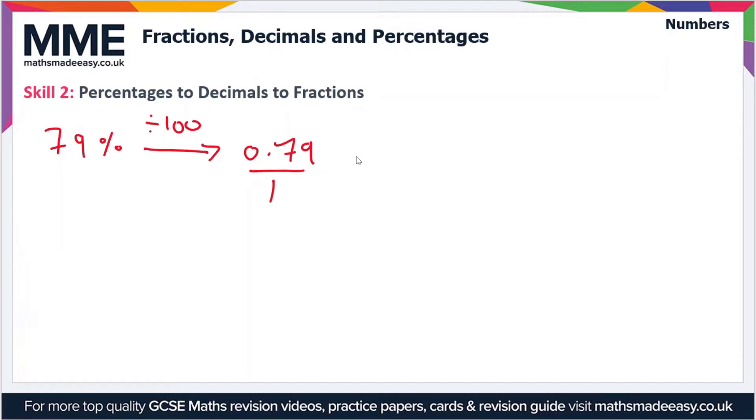Then what we're going to do is multiply top and bottom, so that's the numerator and the denominator, by 10. So that gives us 7.9 over 10, and then we'll do the same thing, multiply top and bottom by 10, and that gives us 79 over 100. So this is now as a fraction.